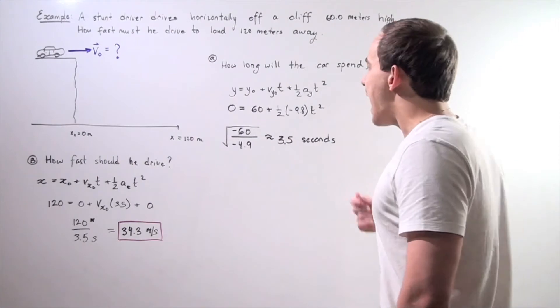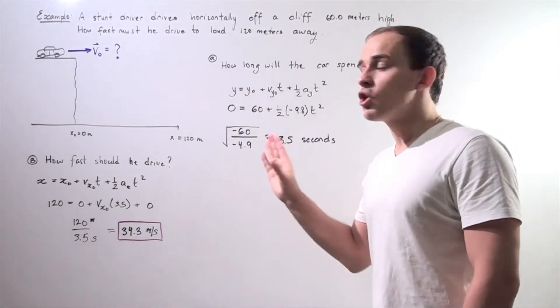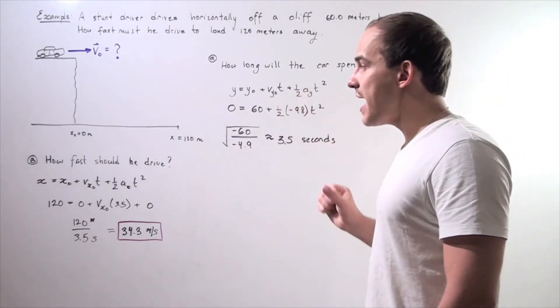The negatives cancel. And we approximate it to be 3.5 seconds. So our car spends approximately 3.5 seconds in the air.